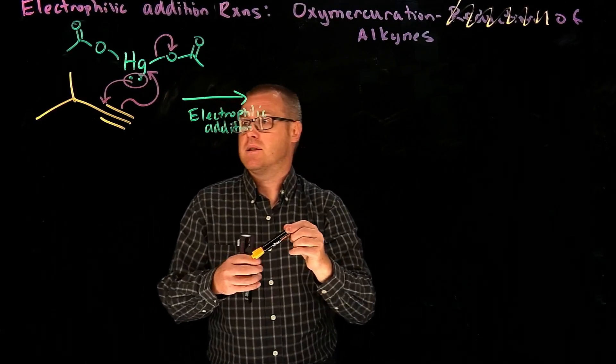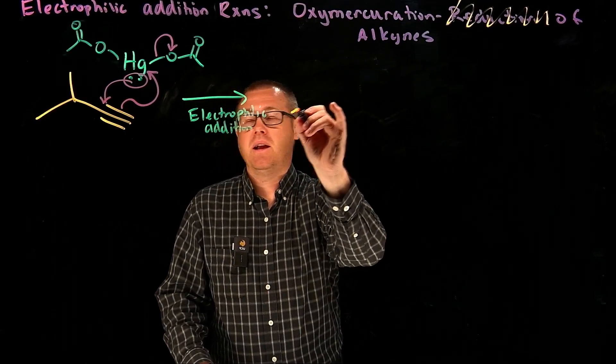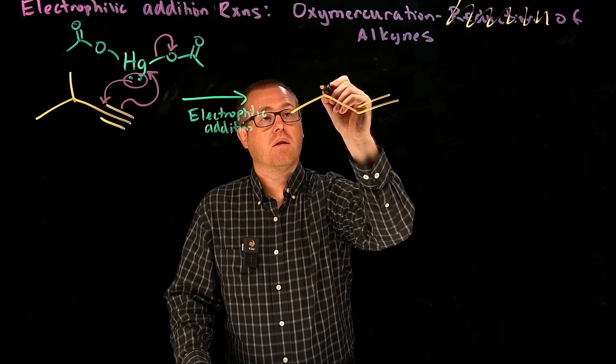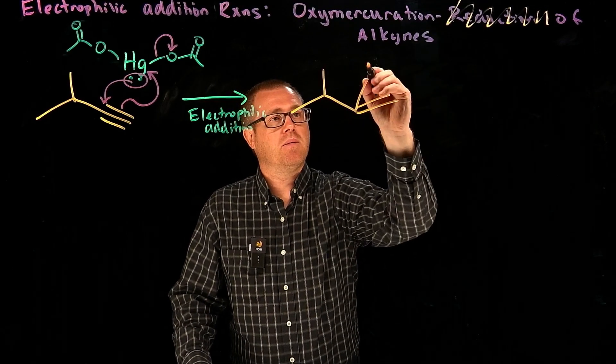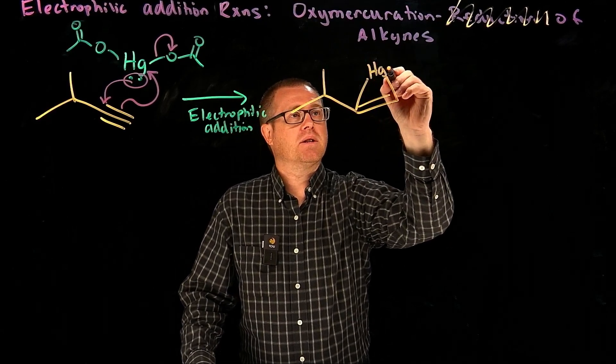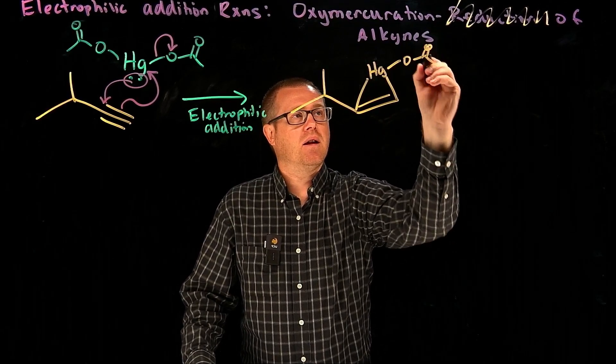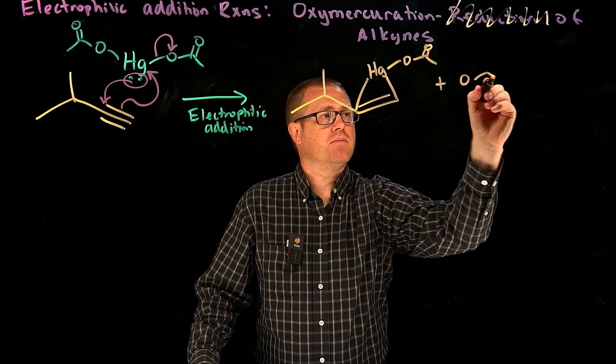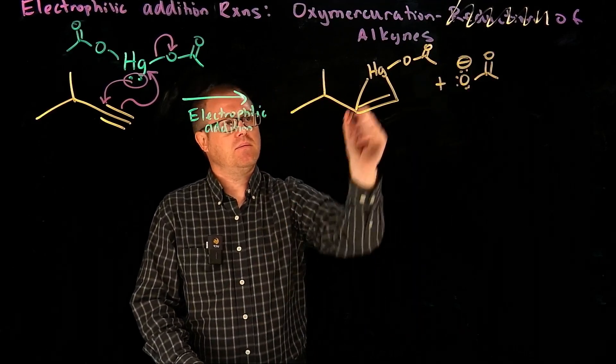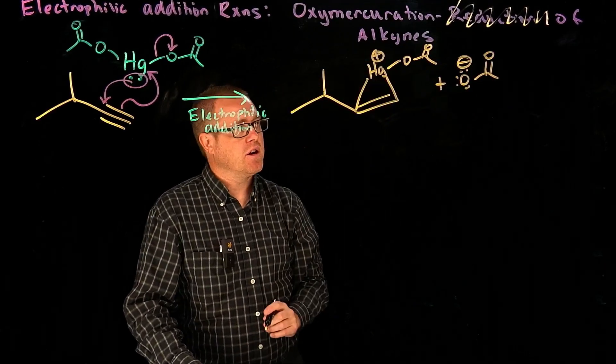We will get this intermediate here that's going to be attached to the mercury, and then we still have one acetate attached. The other one fell off. That's going to be positive charge right there.